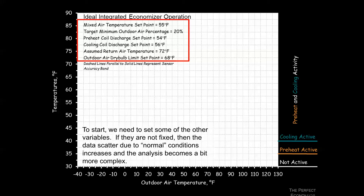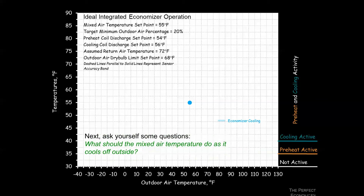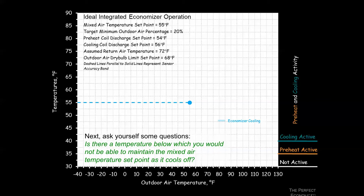When it's 55 degrees outside, we expect the mixed air temperature to be 55 degrees — we just pass that right through. When it's colder, the economizer dampers modulate to continue hitting 55 degrees in the mixed air plenum. But at some point it gets cold enough that we must maintain minimum ventilation and can no longer hold that 55-degree set point.